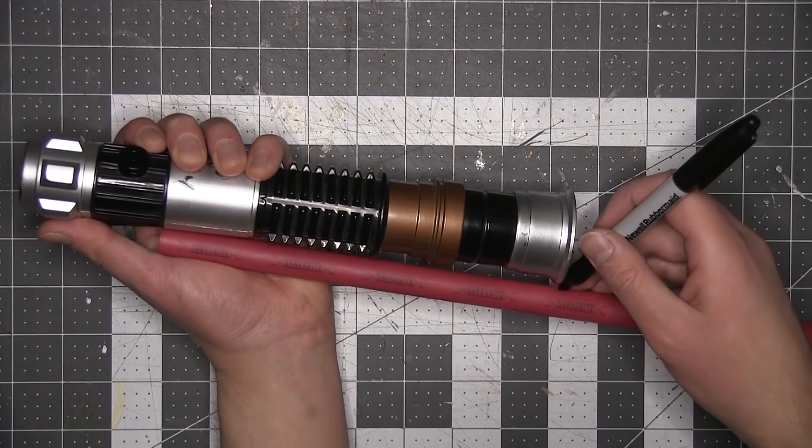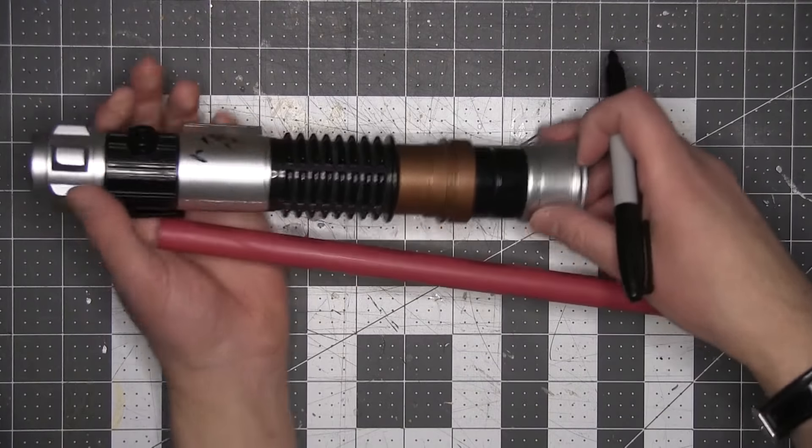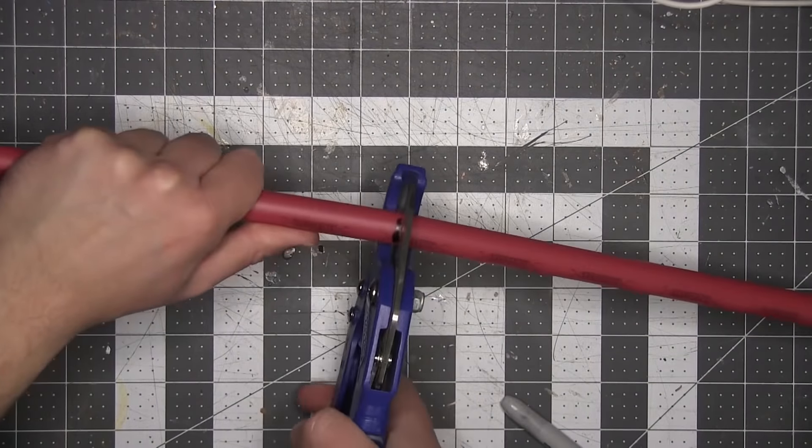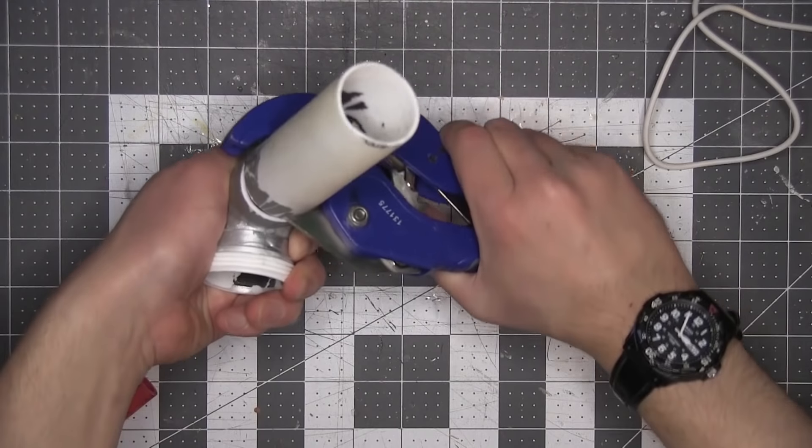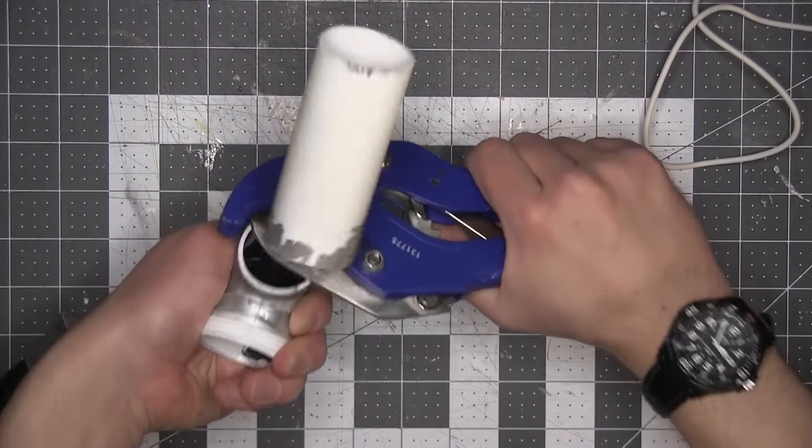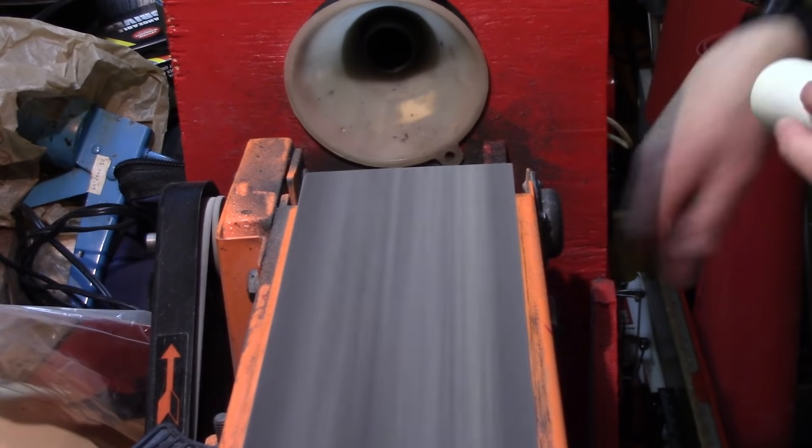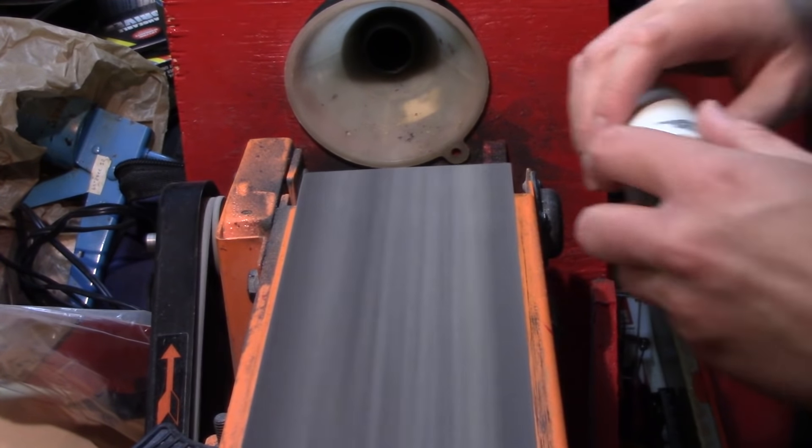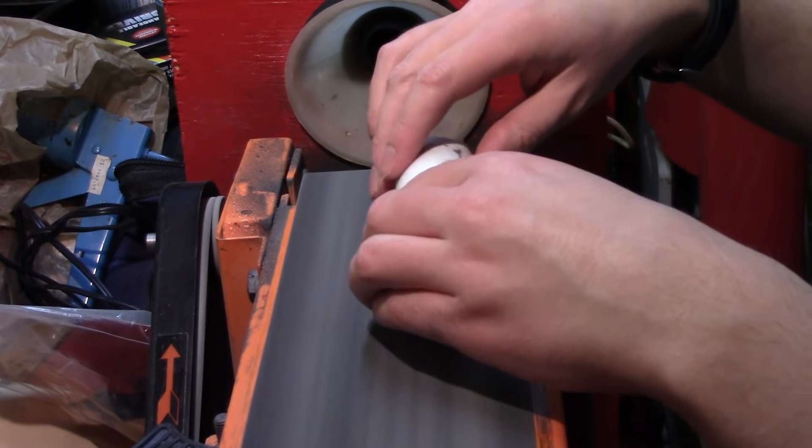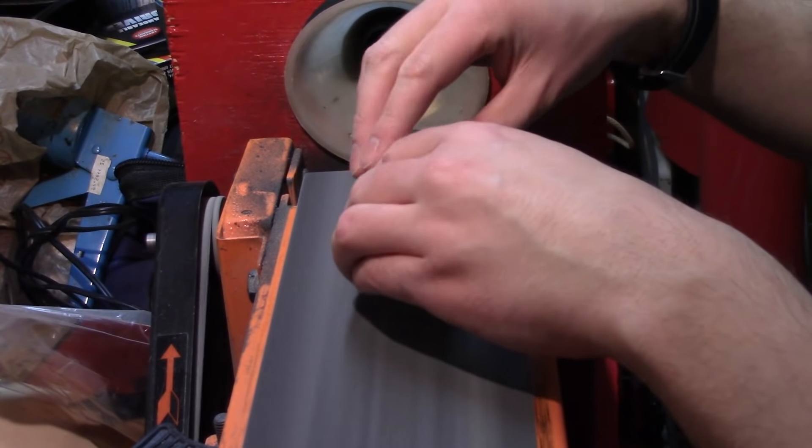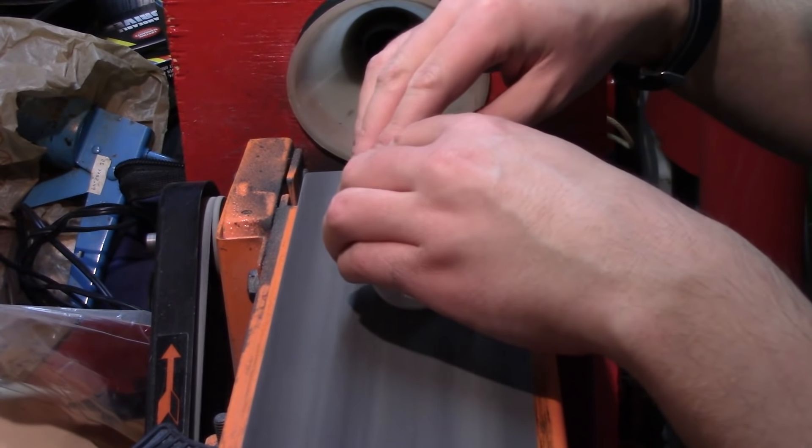The top of Luke's Jedi saber is pretty narrow, so I used a length of PVC pipe for the core. This is going to run most of the length of the saber. I cut it off with a PVC cutter. For the wider section, I cut up this piece of scrap PVC pipe. I lightly sanded it on the belt sander because in my experience paint has a hard time sticking to unsanded PVC pipe.